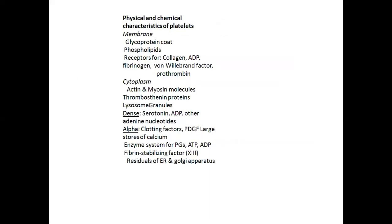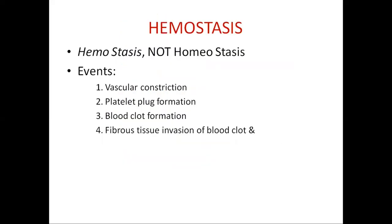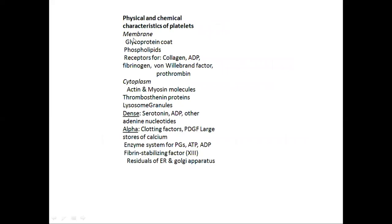The physical and chemical characteristics of platelets: the membrane consists of a glycoprotein coat. Also present in between the glycoprotein coat are the phospholipids. Its membrane also contains receptors for collagen, for ADP, for fibrinogen, von Willebrand factor, and prothrombin.